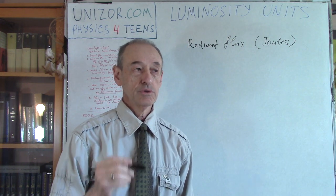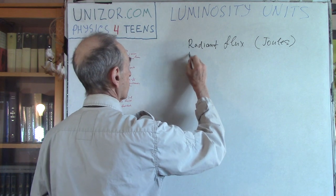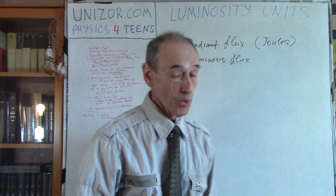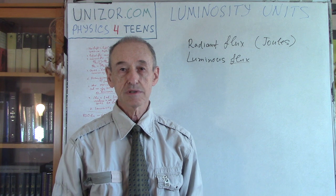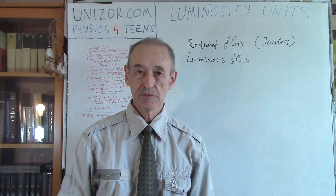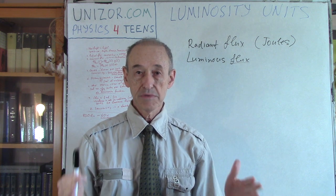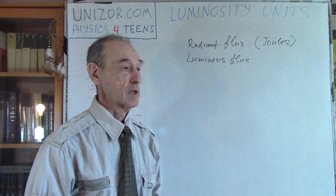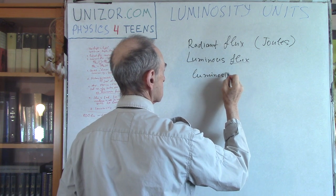The next concept introduces subjective elements like sensitivity. This is called luminous flux. It's also an amount of energy but not exactly the same as radiant flux — there is a modification for the sensitivity of our eyes. All our eyes are different; however, there are certain average sensitivity values towards different wavelengths. Outside of the visible light range, radiant flux still exists, but luminous flux should not. So physicists came up with a function called the luminosity function.